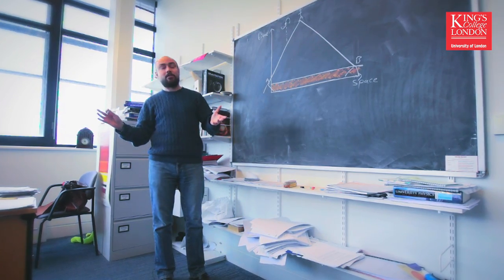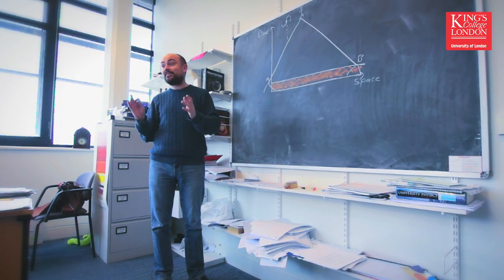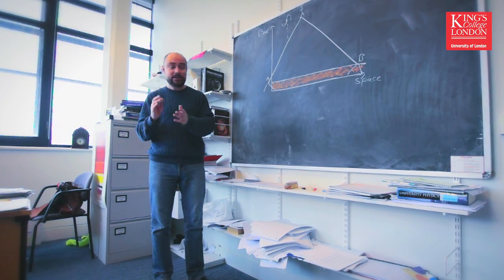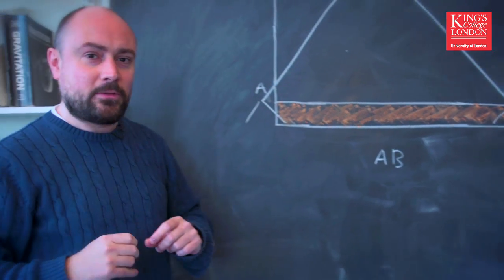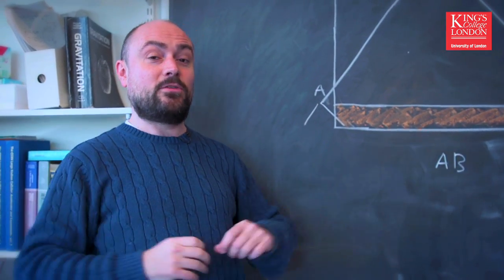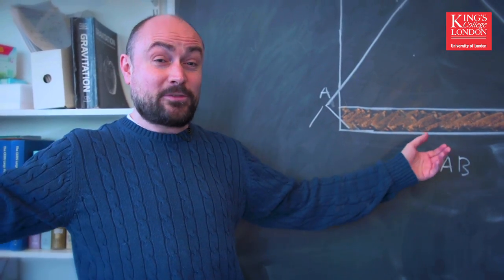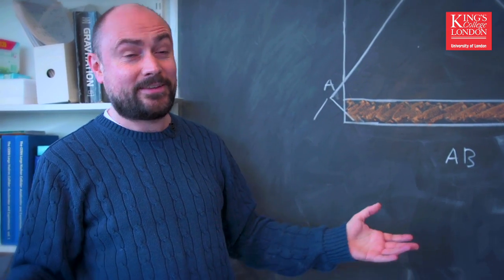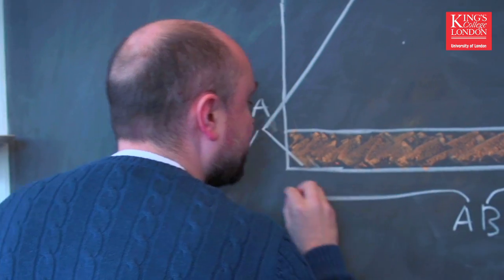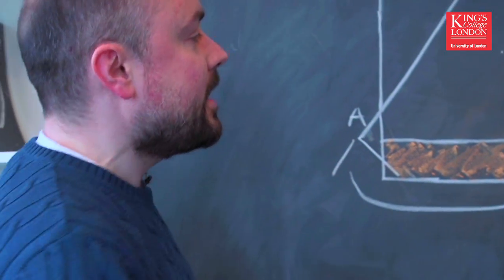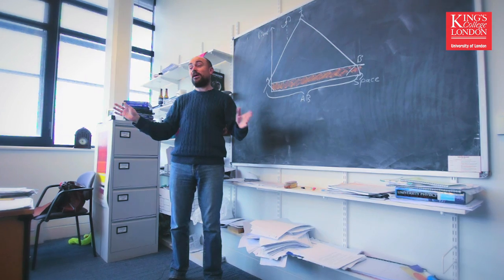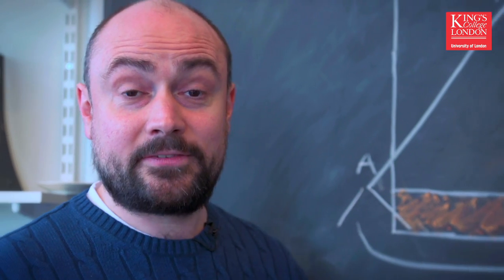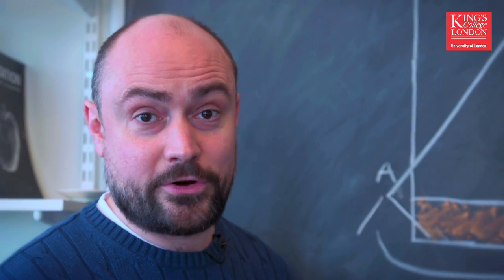The way we solve that problem is that we think A and B actually started off really, really close to each other in the early universe. But then there was a period called cosmological inflation, when the universe expanded exponentially quickly — effectively faster than the speed of light — such that B got zoomed out over there and A got zoomed out over there. And that's how we explain that A and B have both got exactly the same temperature, even though that appears to be impossible. That's the solution to the horizon problem.